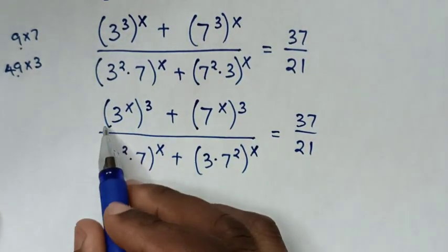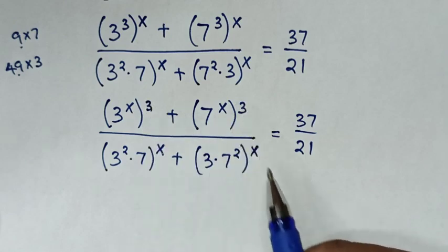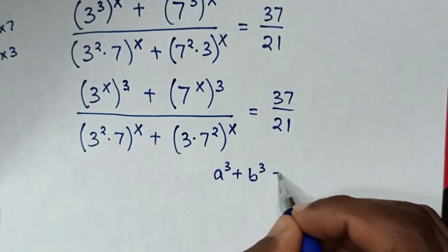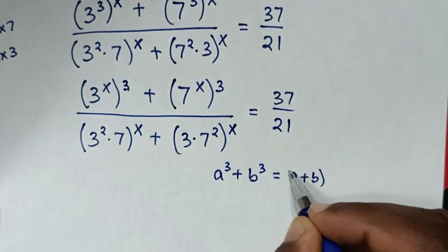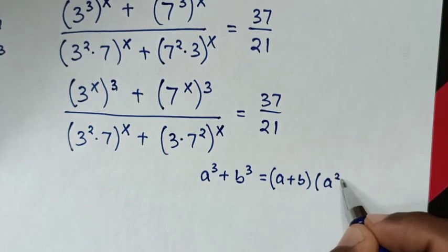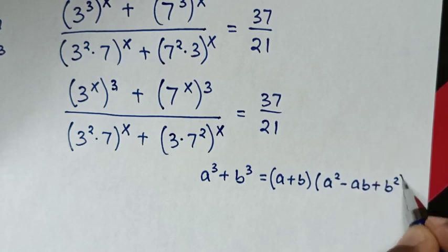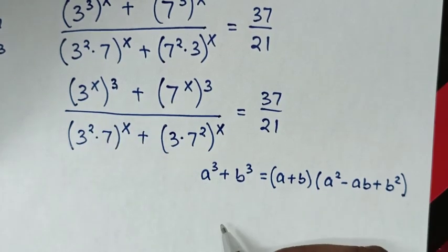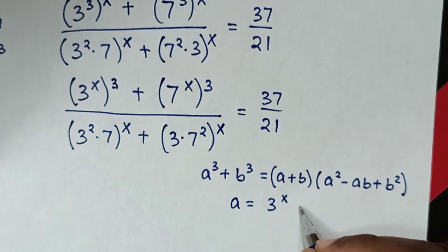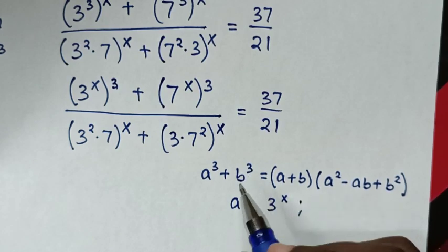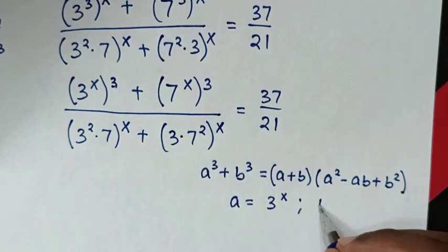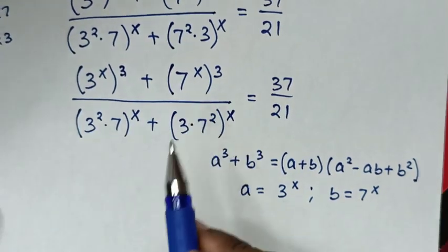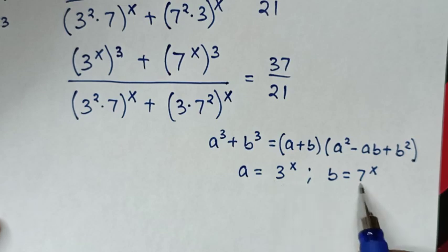Then in the next step, from the numerator we have addition of exponents with powers of 3, so we apply the sum of cubes rule: a^3 + b^3. When we compare a^3 with (3^x)^3, then a is equal to 3^x, and when we compare b^3 with (7^x)^3, then b is equal to 7^x. So from the numerator it will be a plus b, which is 3^x plus 7^x.